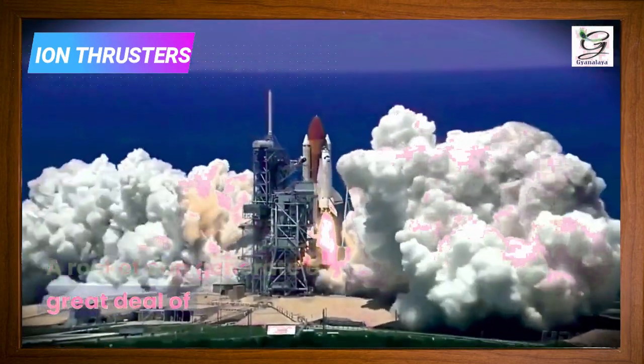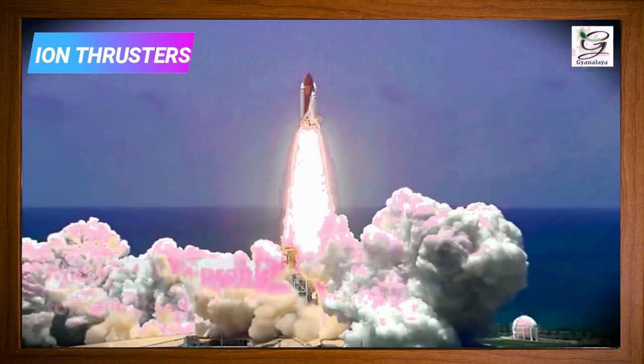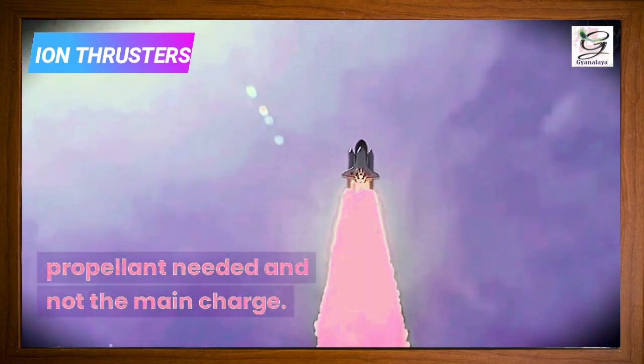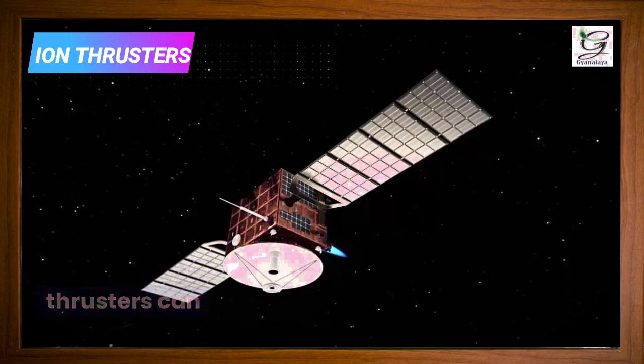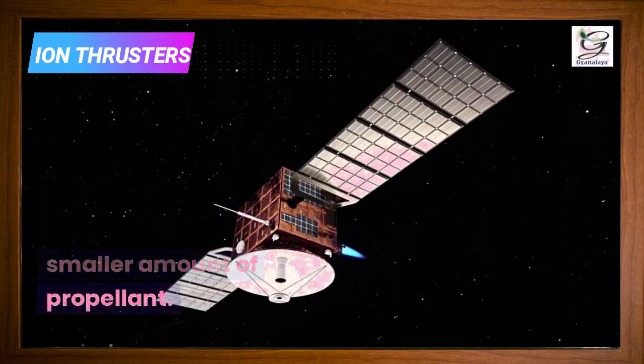A rocket can generate a great deal of propulsive force but only for a few minutes. Besides, much of that propulsive force is used to accelerate the huge amounts of propellant needed, and not the main charge. In contrast, ion thrusters can generate relatively small forces but keep running for months or even years with a much smaller amount of propellant.